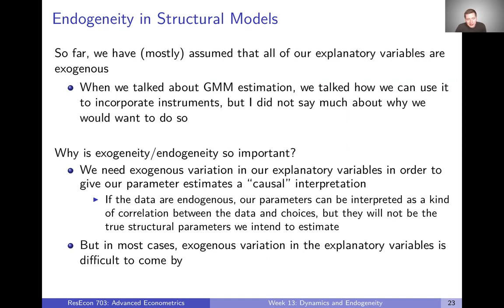So why is this idea of exogeneity or endogeneity so important? We need exogenous variation in our explanatory variables in order to give our parameter estimates the kind of causal interpretation that we want to give them. I put 'causal' in quotes here because this isn't causal inference in the same way that most people use the term — it's not truly causal inference in the way we typically mean it in an OLS setting.